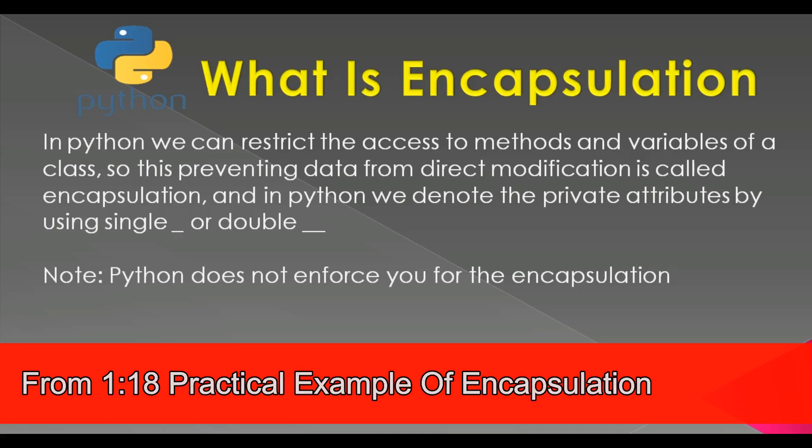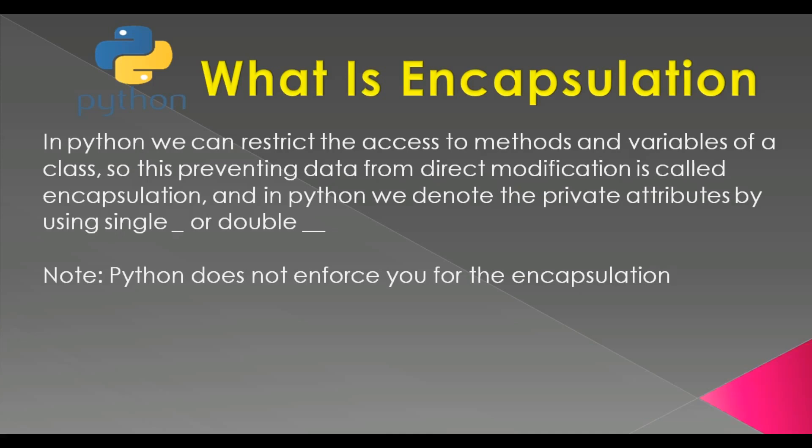If you are familiar with another programming language like C++ or Java, we can restrict access to methods and variables using public, private, and protected. In Python we denote private attributes using single or double underscores. One thing to remember: Python does not enforce encapsulation.